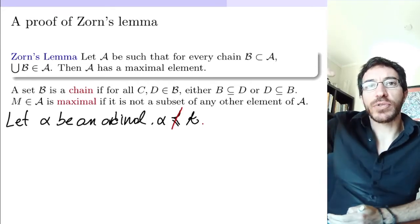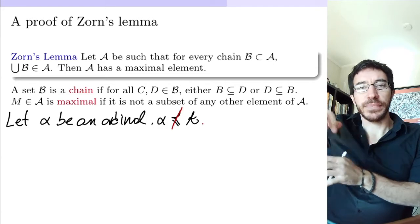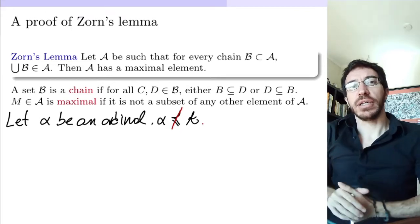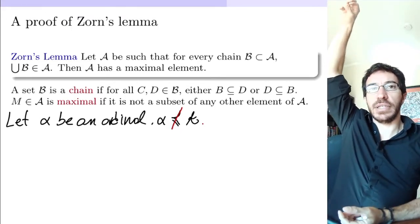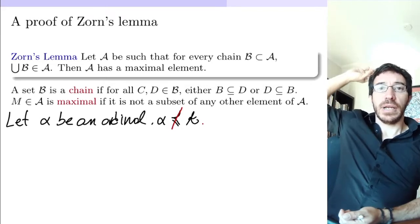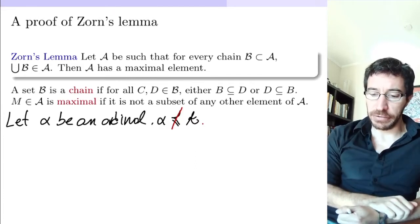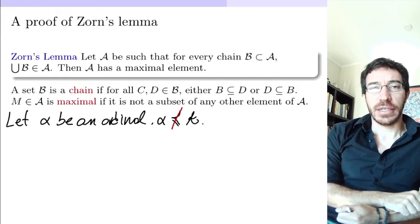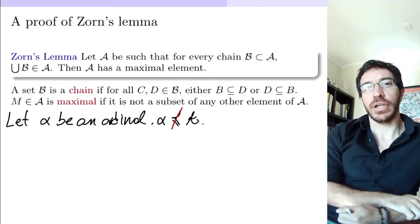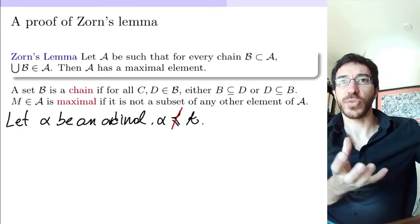There are two possibilities: either eventually we reach a maximal element, or we just keep on finding bigger and bigger elements. The hypothesis about this collection A — that the union of every chain belongs to the collection — allows us to keep on doing this recursion defining these sets. Even when we go through infinite ordinals and limit ordinals, you can always take the union and keep on going, unless you reach a maximal element. The final punchline is that if we never find the maximal element, we end up building a one-to-one map from alpha to the collection, which we are assuming we cannot, because alpha has more elements than the collection.